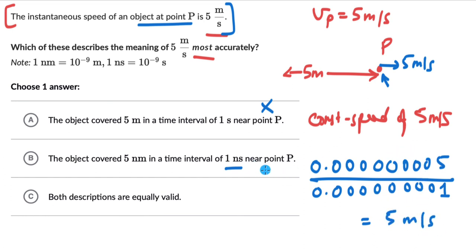So this could very well be true that near point P, if the instantaneous speed of an object at point P is 5 meters per second, it is covering a distance of 5 nanometers in an interval of 1 nanosecond.